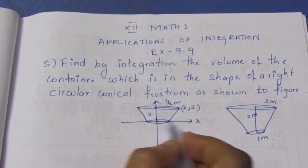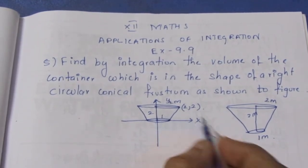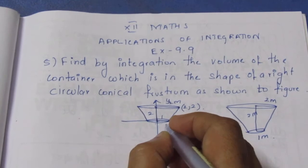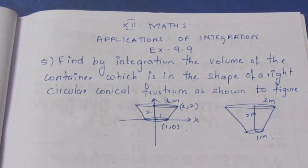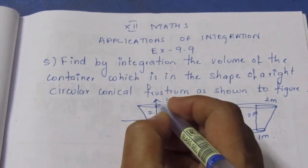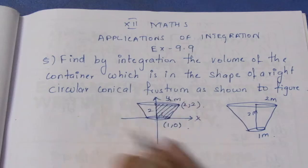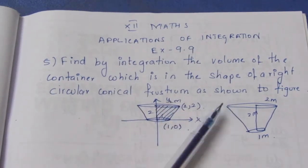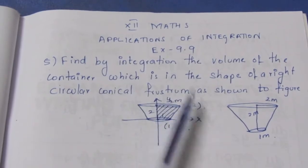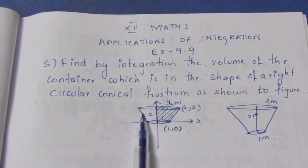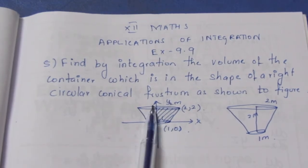If you look on the X-axis, it is 1m and 1m. If you take a line on this side and rotate the sides, we have volume. If we rotate along with the Y-axis, we will rotate this shape to get the volume. We will rotate this line along with the Y-axis.